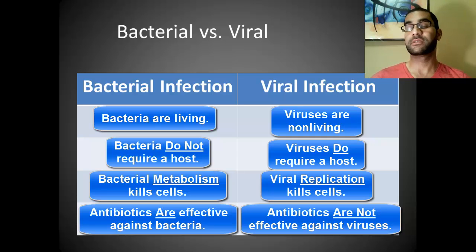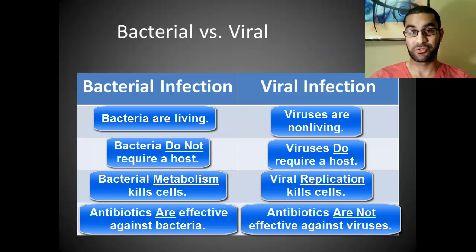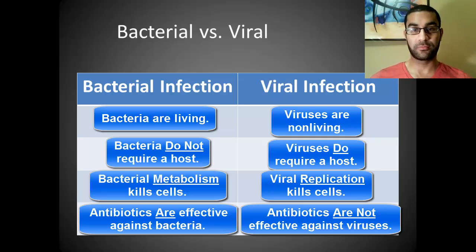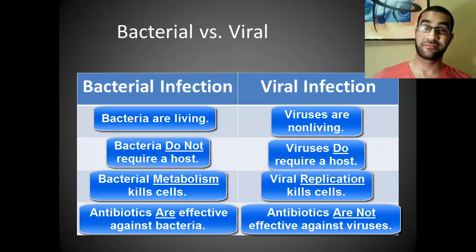There are a few bacteria out there now considered superbugs that have become resistant to just about any type of antibiotic we know of, which is really scary. But most bacterial infections can be controlled by some form of antibiotics. On the other side, a virus pretty much laughs in the face of an antibiotic — antibiotics do nothing for a virus because it doesn't have any of the components the antibiotic works against. Keep those key differences between bacterial and viral infections in mind as we go through the third line of defense.